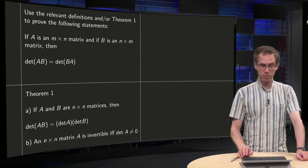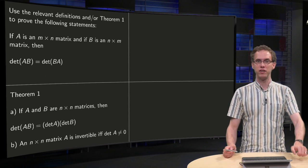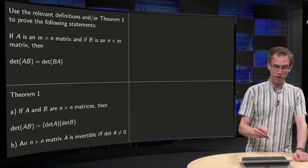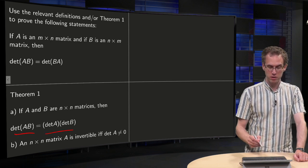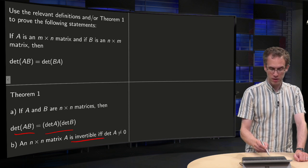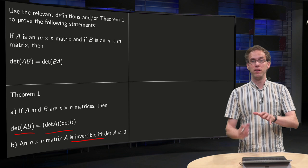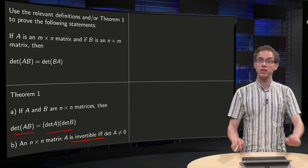And we can use Theorem 1 if we like and the relevant definitions. So what is Theorem 1? Theorem 1 says that det(AB) equals det(A) times det(B), and matrix A is invertible if and only if the determinant is non-zero. Maybe we don't need it, but we can use it if we want.